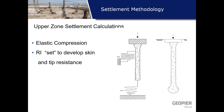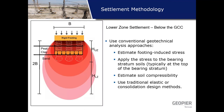The settlement of the pad is easy: just the stress applied to the pad times the thickness over the modulus of elasticity. The upper zone — the pier length — is really the elastic compression of the pier from the load plus the geotechnical set required to develop skin friction and end bearing. We measure the geotechnical set from a load test: we put load on the piers, measure deflection, place a telltale on the bottom, and measure movement at the top and bottom to confirm we're engaging bearing.